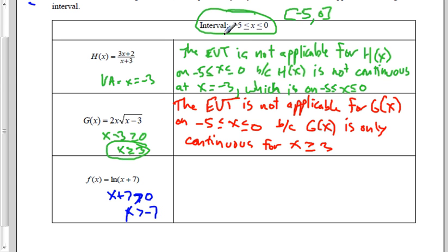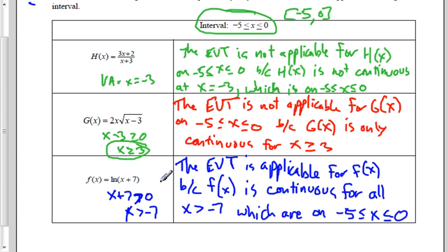So negative 6 will work, and obviously everything above that. This tells us that it's continuous over that closed interval. So now we know that it's going to work. Extreme Value Theorem is applicable for the function f of x because the function is continuous for all x greater than negative 7, which are on the closed interval from negative 5 to 0.